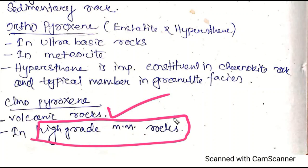This concludes the pyroxene group of minerals. In the next class we will study the mica group, and also garnet and olivine groups. You will see the atomic structure figures and 3D figures in the description and comment section.